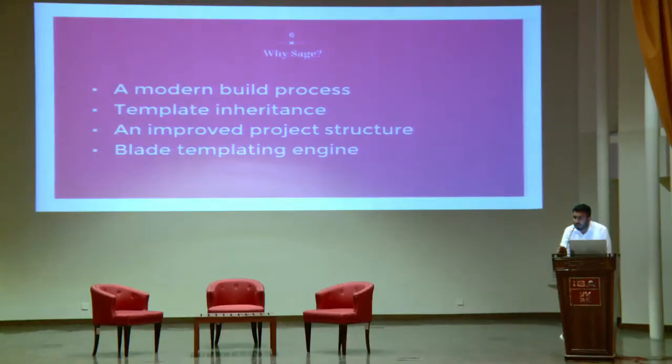The next reason to use Sage is template inheritance. Template inheritance is something new in WordPress theme development — it's commonly used in other frameworks but not in WordPress. Only Sage provides this functionality. With template inheritance you can make a base layout file and include all common web elements like headers, sidebars, and footers in it. So you don't have to write get_header, get_footer, or get_sidebar again in every theme template file. This is template inheritance, a very useful feature of Sage 9, also known as the theme wrapper.